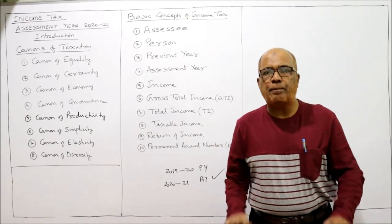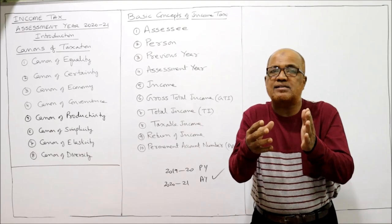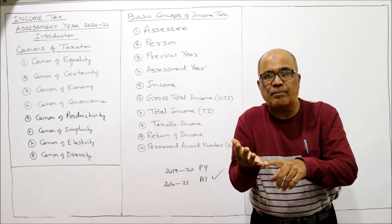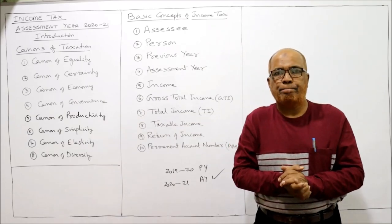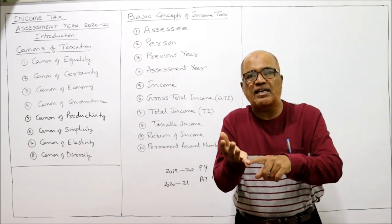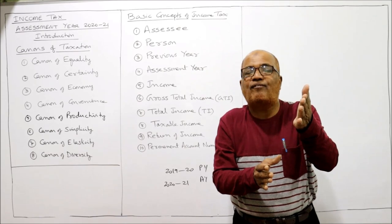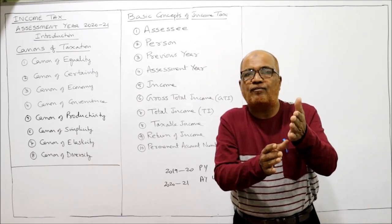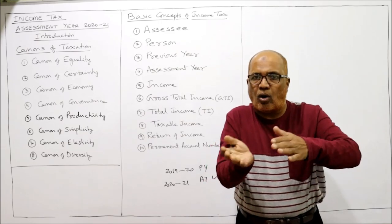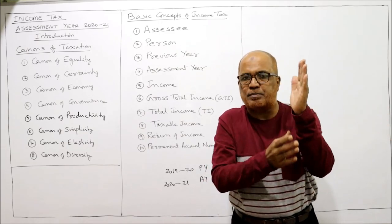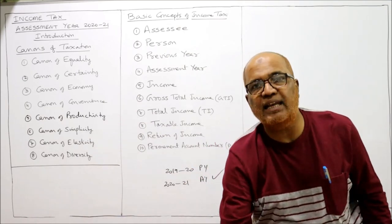Return of income: a prescribed format is given by the income tax department for submitting details regarding the incomes, savings, investments, and deductions of the assessee. The assessee has to provide all the details of income, savings, and deductions in this prescribed form. That prescribed form is called the return of income, and filing it in the specified format given by the income tax department is called filing the return.